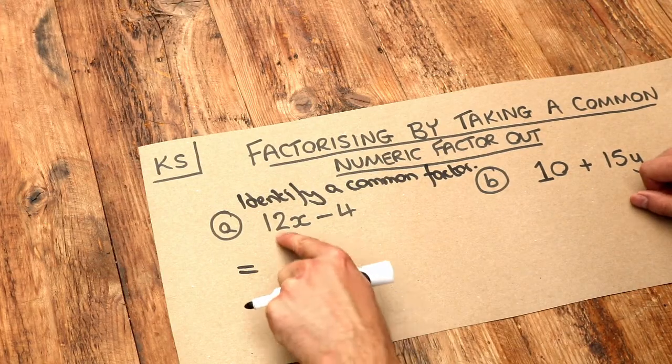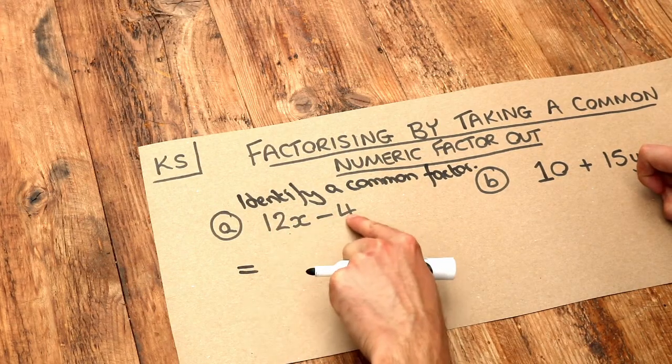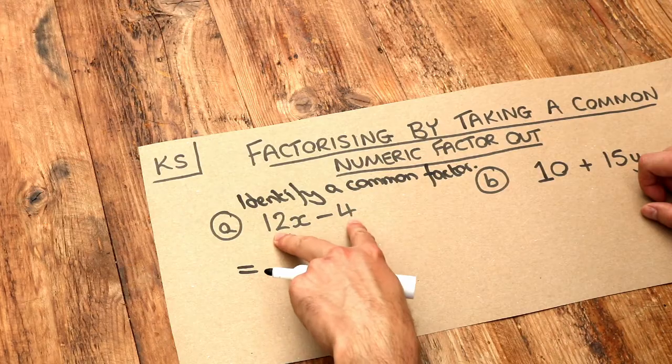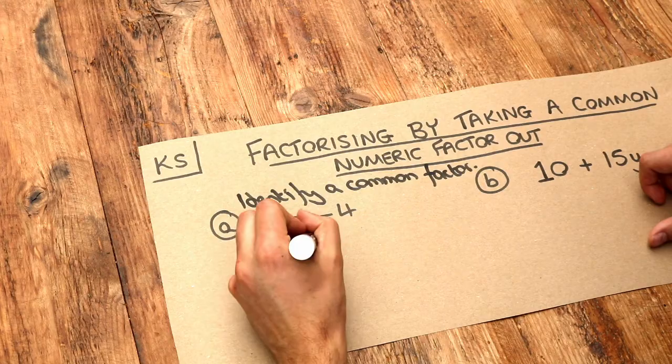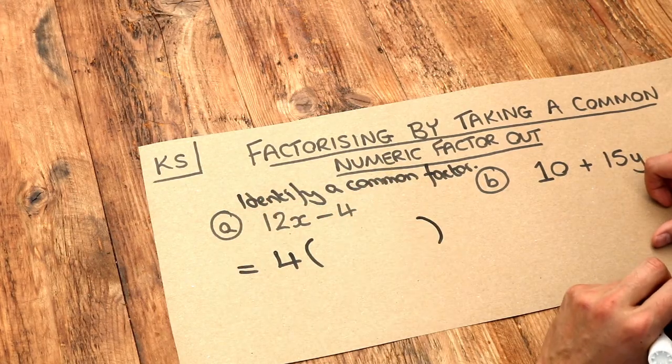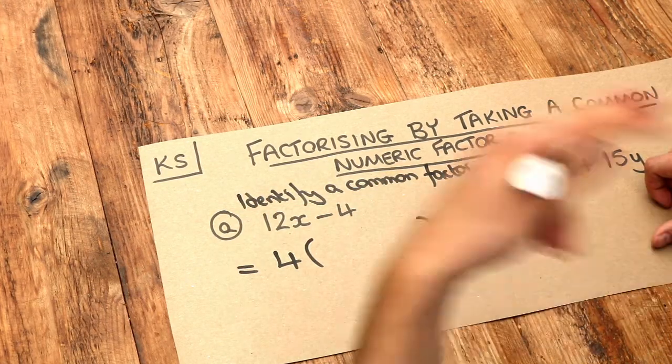So what's common to 12x and to this 4 here? Well, 12 and 4 both have a common factor of 4. So what we do is we put that 4 in front of a bracket and then we think about expanding but backwards.